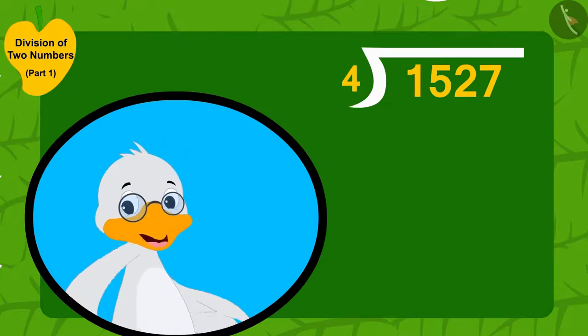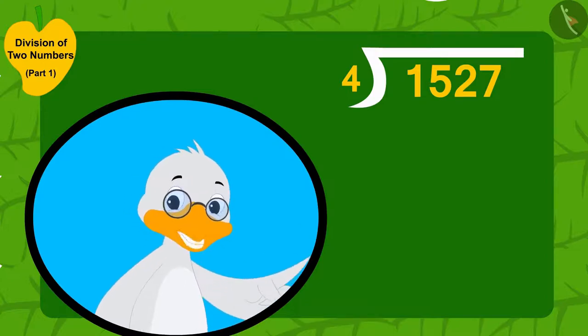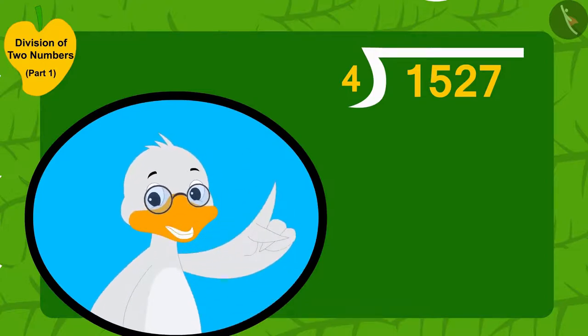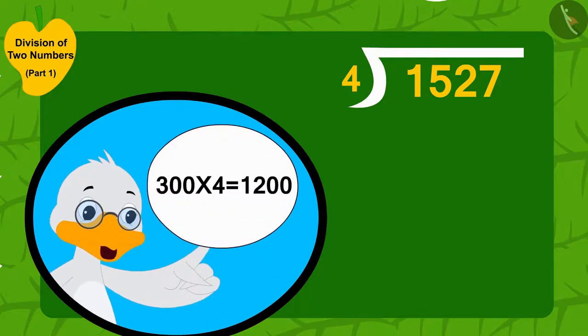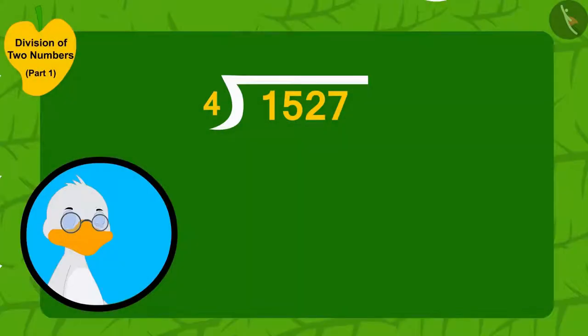I distributed four mangoes to 300 villagers. That means, I distributed three hundred multiplied by four. That is, one thousand two hundred mangoes. Now, uncle wrote three hundred here.